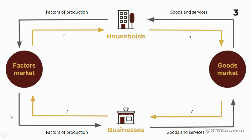What flows from households through the goods market to businesses and from businesses through the factors market to households? Money flows that way. Households spend money, which becomes an income for businesses, and businesses spend money, which becomes an income for households.